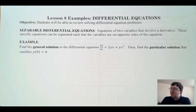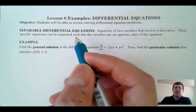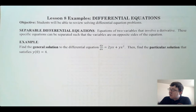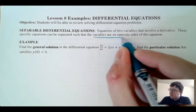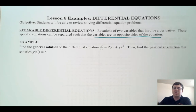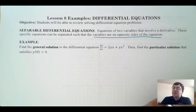Okay, here we go — lesson eight: differential equations. The kind we can solve here are separable differential equations — specific kinds where we can put the variables on opposite sides of an equation. A separable differential equation is just an equation that has a derivative in it, so it has an equal sign and one of those things is usually a dy/dx. Here we've got dy/dx equals 2yx plus yx squared — it's a differential equation because it's got an equal sign and a derivative.